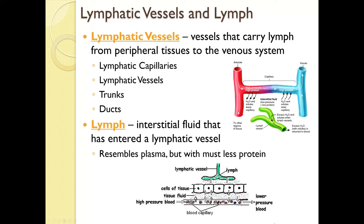Here is another picture illustrating this fluid flow. We have a blood capillary with filtration of fluid at one end and reabsorption at the other, but more fluid is filtered out than goes back in. This fluid diffuses around the cells of a tissue, and the extra fluid is picked up by a nearby lymphatic vessel. When it enters that lymphatic vessel, it becomes lymph.